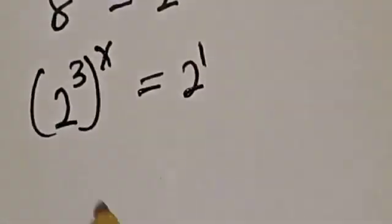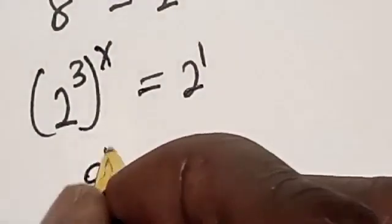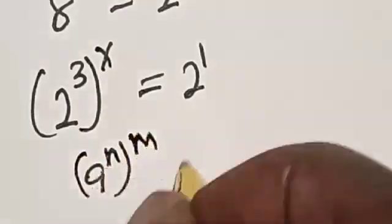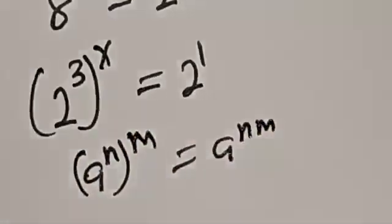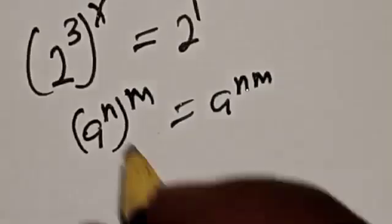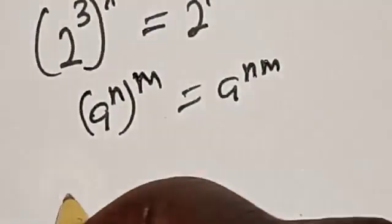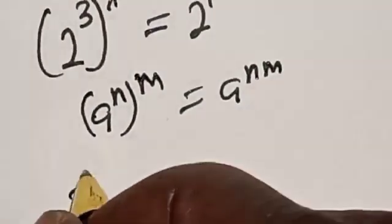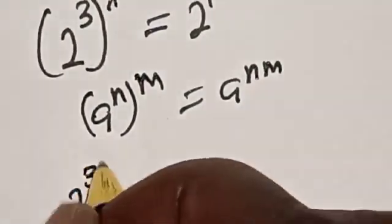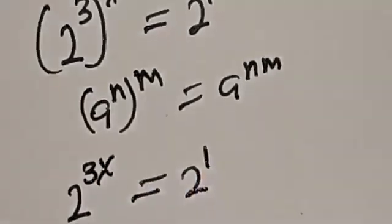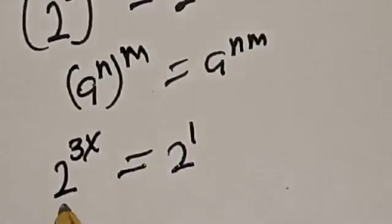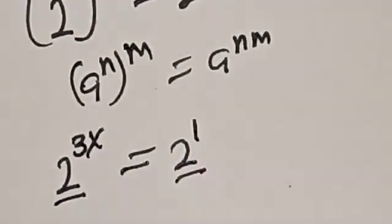Remember this rule: if you have a raised to power n raised to power m, it is equal to a raised to power n times m. Then this becomes 2 raised to power 3x. They have the same base 2, so we are left with the exponent.